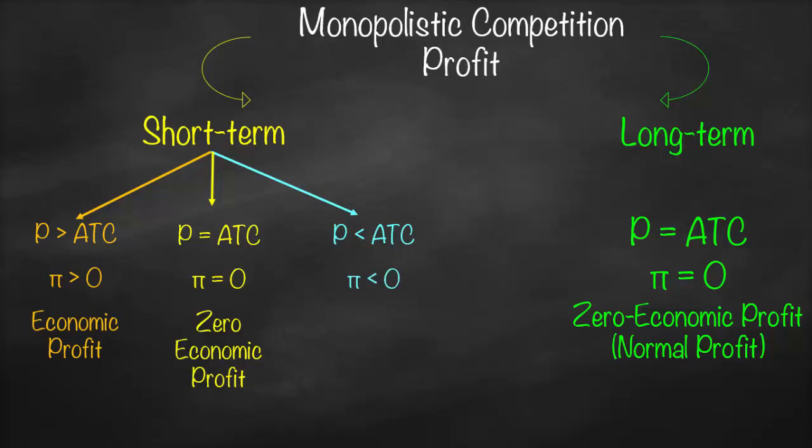Our third scenario is when price is lower than average total cost, meaning our profit is lower than zero — we have a loss. If we have a loss, some firms will leave the market permanently and exit until we reach the long run, where we again have zero economic profit.